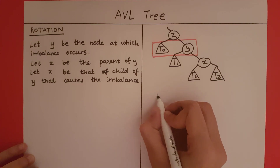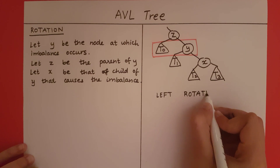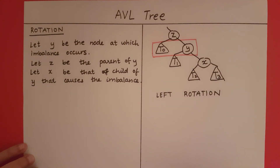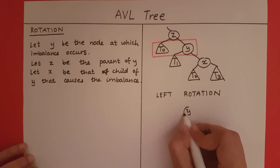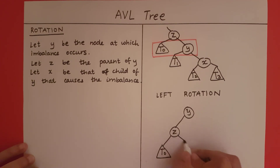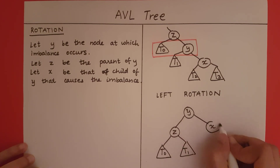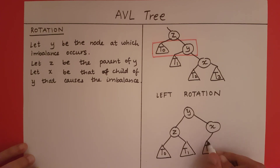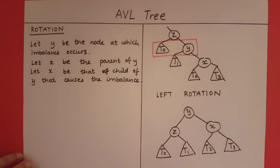So what am I performing? I am performing left rotation. If I rotate it to the left, I will get a balanced tree like this.